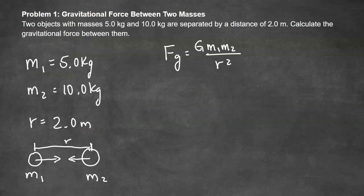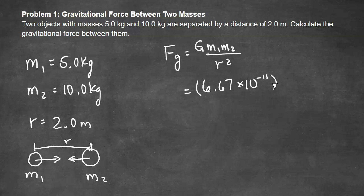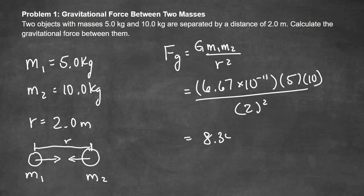Problem 1: Two objects with masses of 5 kg and 10 kg are separated by a distance of 2 meters. Calculate the gravitational force between them. Using Fg equals big G times M1 times M2 divided by R squared, with G equal to 6.67 times 10 to the negative 11, we plug in both masses and the distance squared (2 squared), and we get 8.34 times 10 to the negative 10 Newtons.